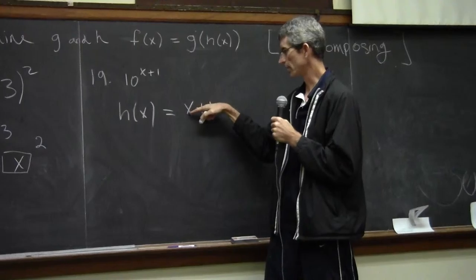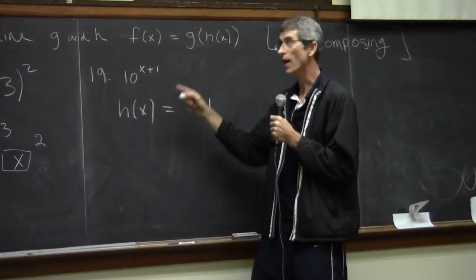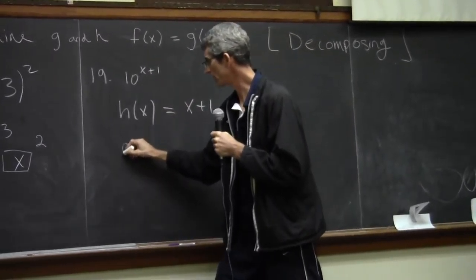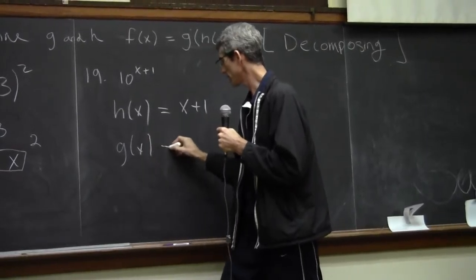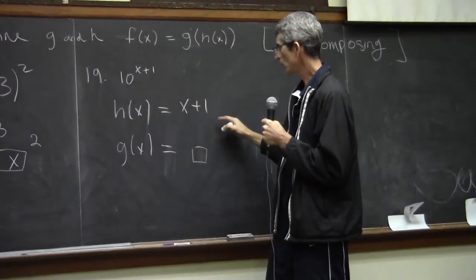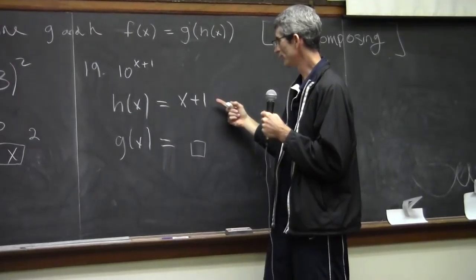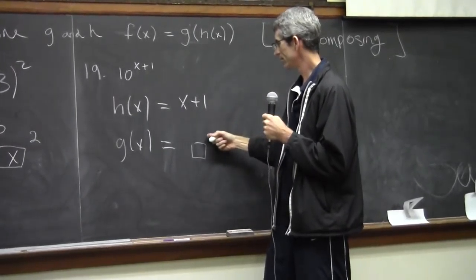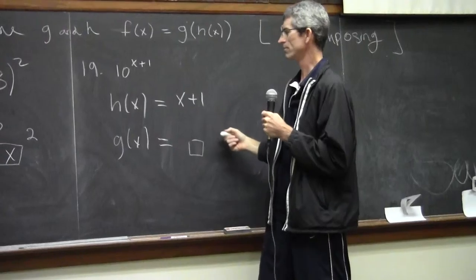Whatever x is, I'm going to stick it in there, get a value, then raise it up. So g(x) is going to be some container raised up to whatever that power is. Wait a minute, how do we write that?